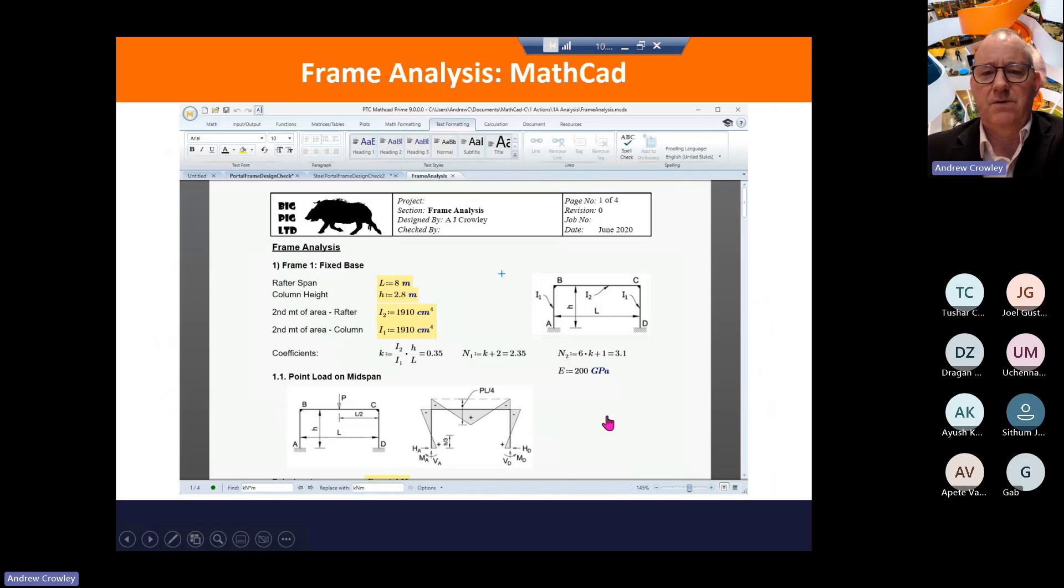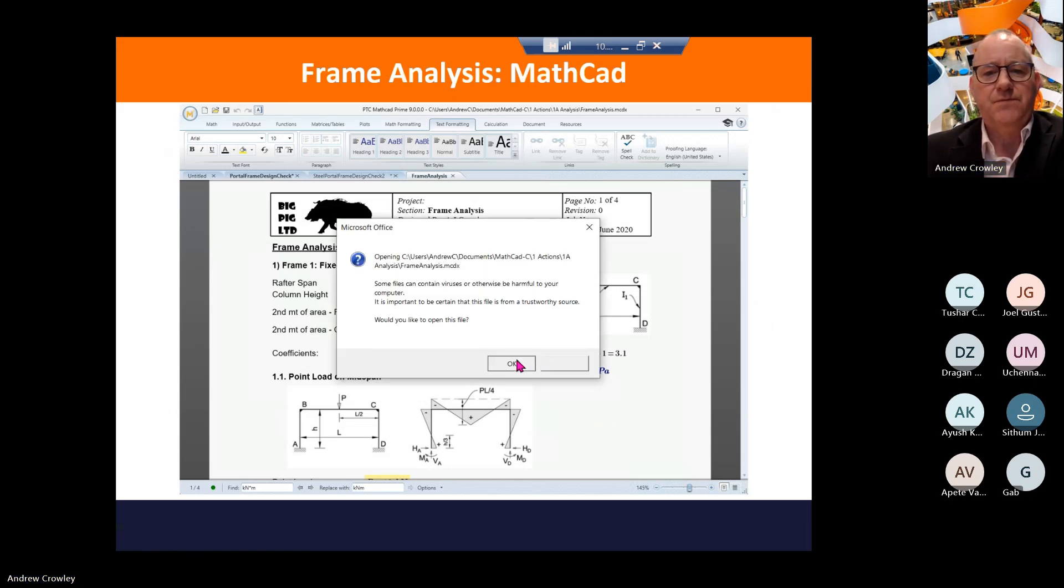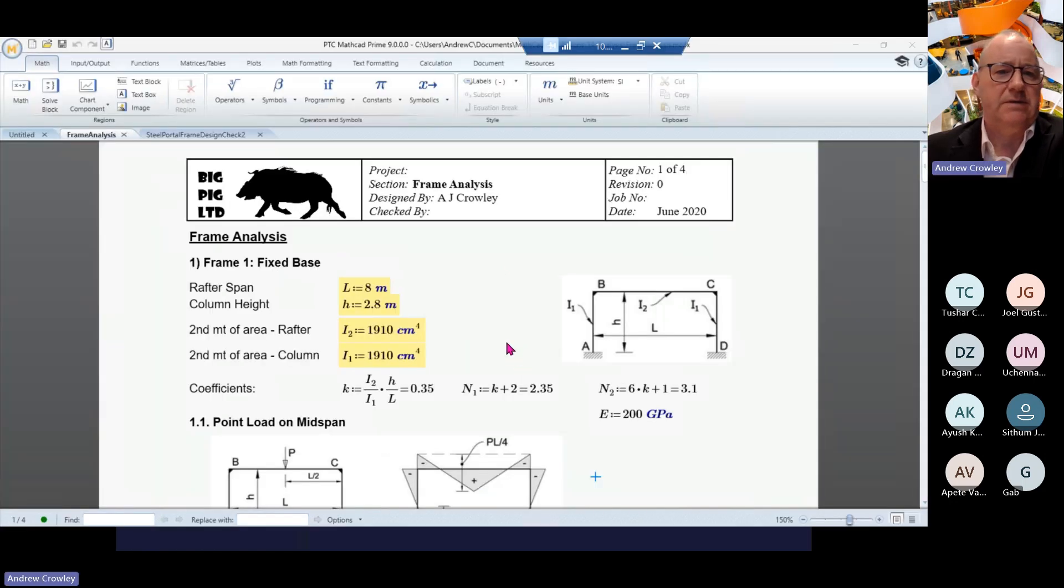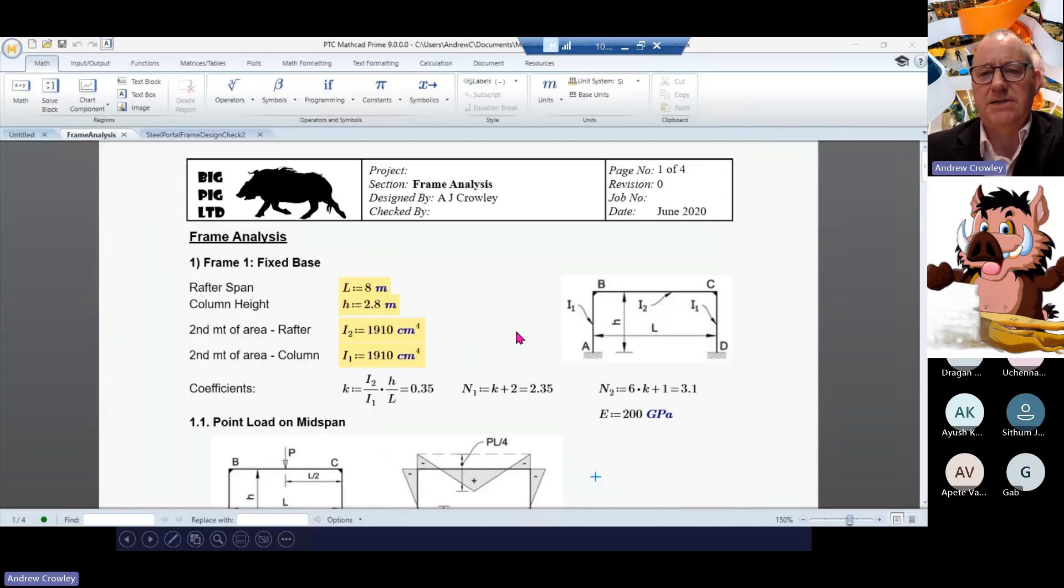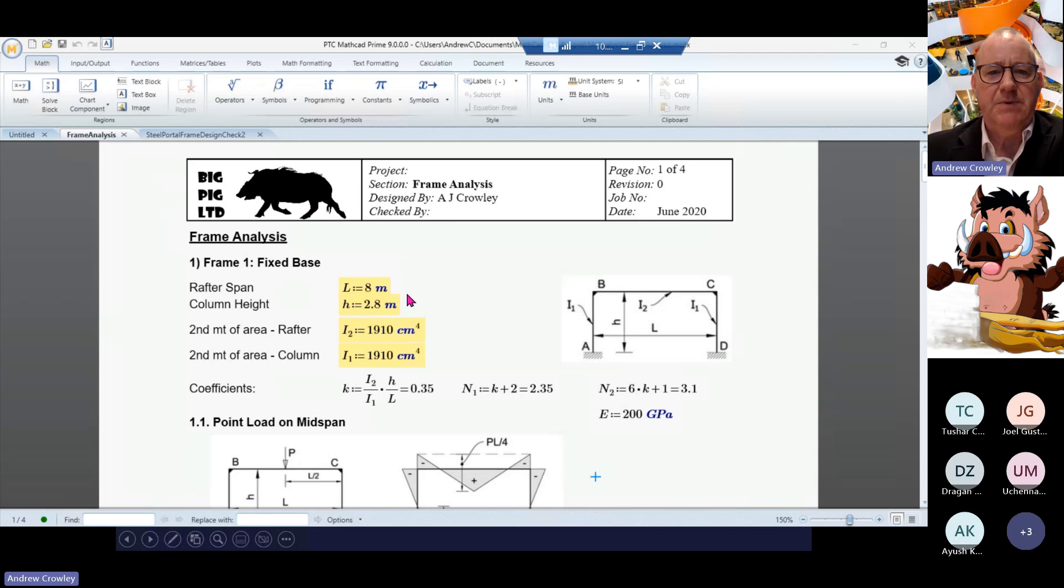So, here's one way of putting into Mathcad. Here's the Mathcad file for some basic frame analysis. And these are the formulas that we get from the Klein-Logel tables. You put in the basic information, the length of the frame and the height of the frame, and the second moment of areas of the rafters and the columns, for example. Notice we haven't got an e-value in here because we assume that the e-value is constant as well.